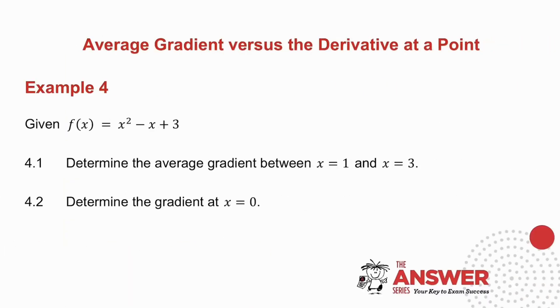The last thing I want to look at is the average gradient versus the derivative at a point. Now if you remember, we did average gradient in functions. So the average gradient is if you were to draw a straight line between two points and get the gradient, you will be finding the average gradient. So it doesn't matter what's happening with the curve. The average gradient is the gradient of the straight line joining two points. So in example 4, I've given you a parabola for f of x.